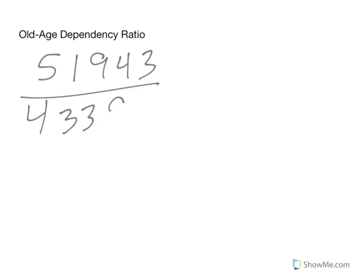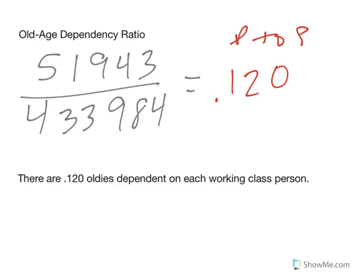The old age, we need the oldies now. The 51,943 divided by the working class, 433,984, gives us 0.120. Again, these are all part to part. There are 0.120 oldies dependent on each working class person.